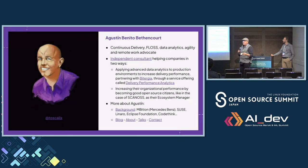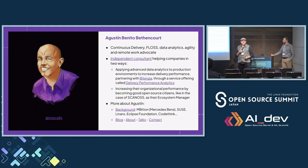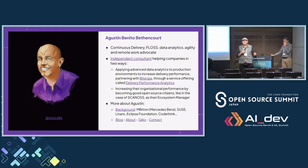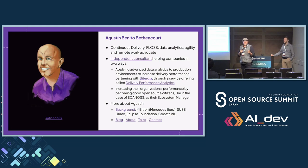Let's start with who we are. My name is Agustin Benito. One of the things I do is I help companies to optimize their investment, their time, and their efficiency in open source. The other thing I do is help companies to optimize their delivery process, and that second topic is what brought me here.